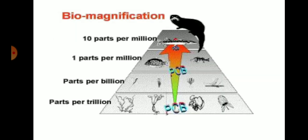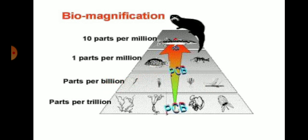This diagram shows the rate of biomagnification in organisms. Primary consumers have a very low rate of accumulation — parts per trillion. Secondary consumers have accumulation at parts per billion. Tertiary consumers have one part per million accumulation. The top-level consumers have 10 parts per million biomagnification of pesticides in their body.